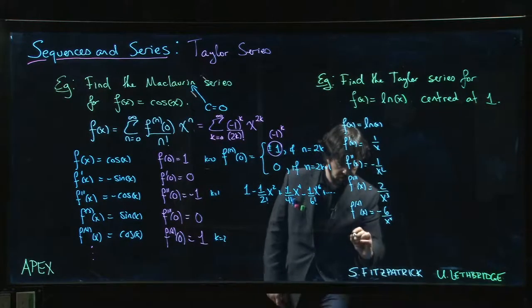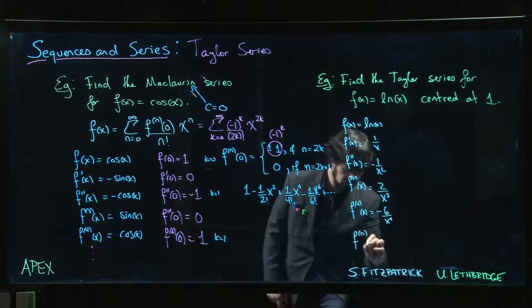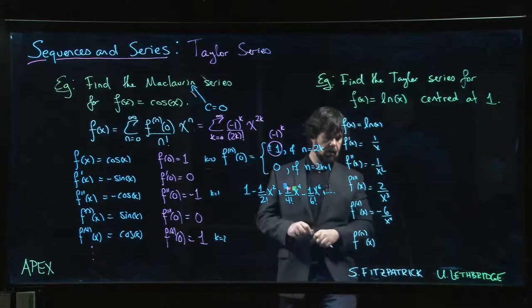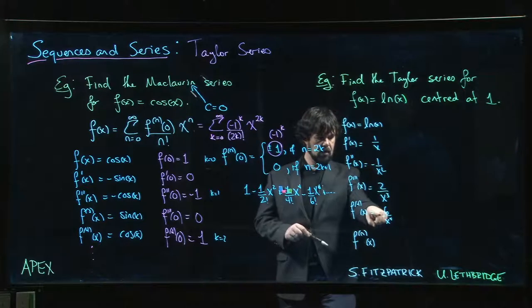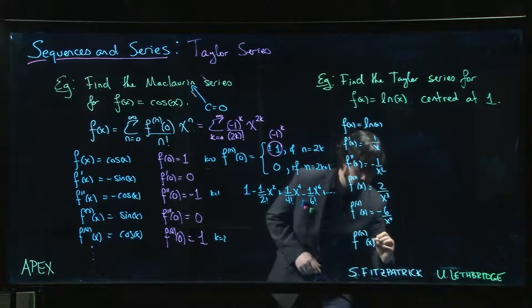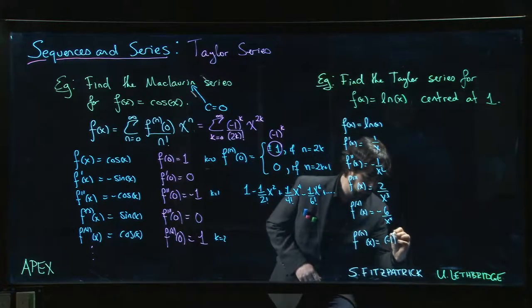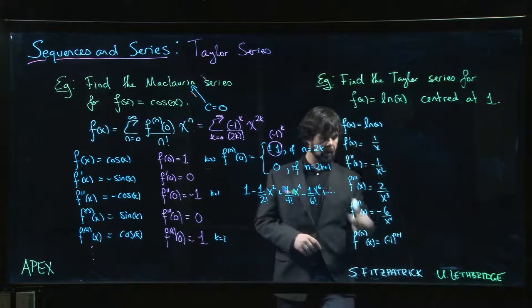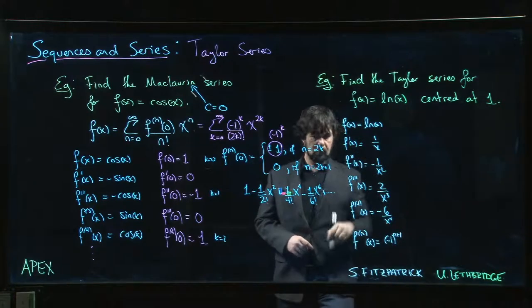And so, hopefully, eventually, you kind of catch the pattern. The nth derivative, well, there's a sign factor there. It's negative when n is even, it's positive when n is odd. So we're going to get minus 1 to the n plus 1, right? The plus 1 gets us to that.